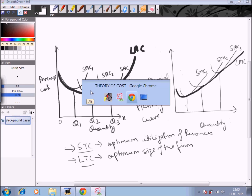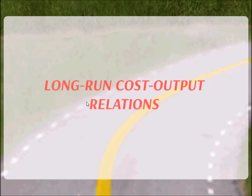So in this session we have studied the long run cost output relations and how we determine the long run cost curves with the help of the short run cost curves. In the next session we will be starting with economies and diseconomies of scale, which are related to the scale of production. Till then, have a nice time and thank you for watching EduPedia World.